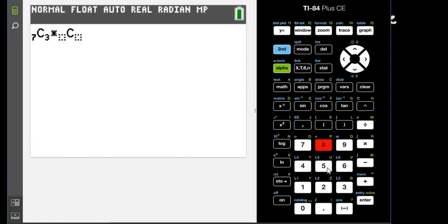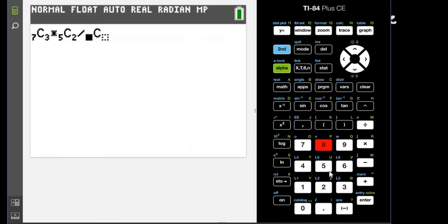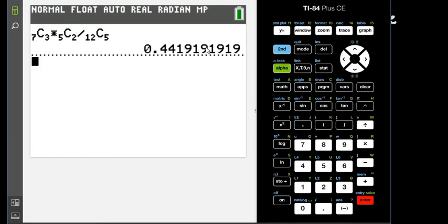So I would put in the 5C2, and then we would divide this by 12, and then change this to a 5. So this one makes it a little more succinct, a little bit nicer to see. And then if I press enter, I get 0.4419. So I get the same thing, either calculator.